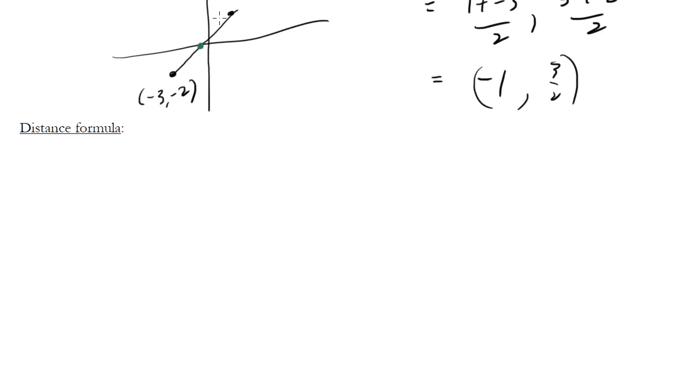the distance between two points, say these two points up here, is equal to the square root of the difference of the x coordinates squared, and the difference of the y coordinates squared.